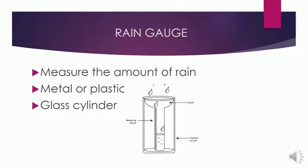A rain gauge measures the amount of rain that has fallen. Look at the picture. This is a metal or plastic container. At the top of it is a funnel. Inside the container is a glass cylinder marked in millimeters. Rain falls on the funnel and collects in the cylinder where it is measured every day.